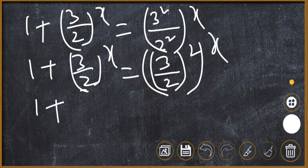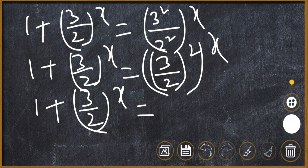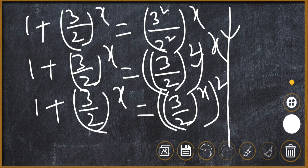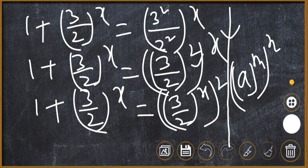So 1 plus (3/2)^x is equal to (3/2)^(2x), which we can write as [(3/2)^x]^2. We use the rule that a^(m·n) can be written as (a^m)^n.